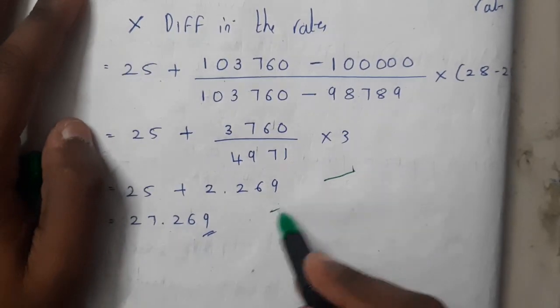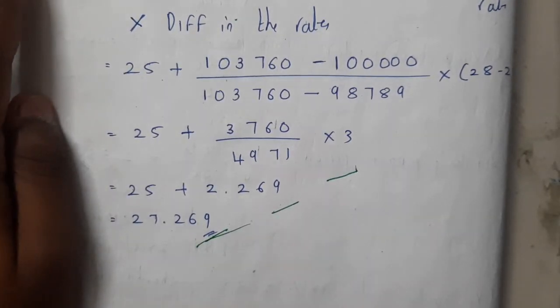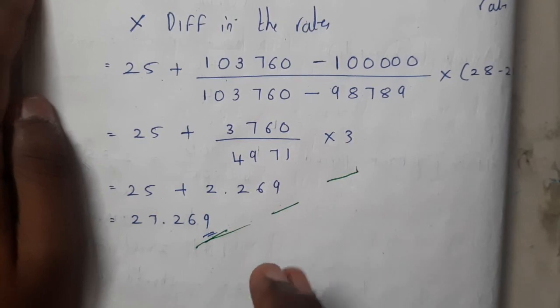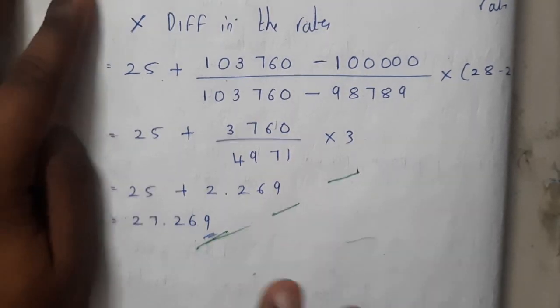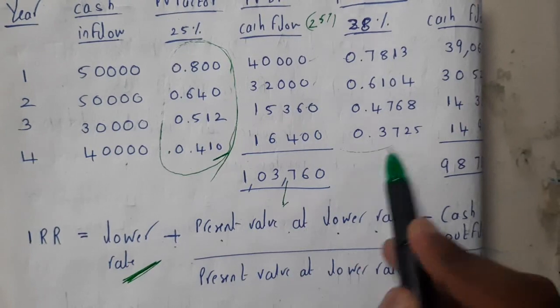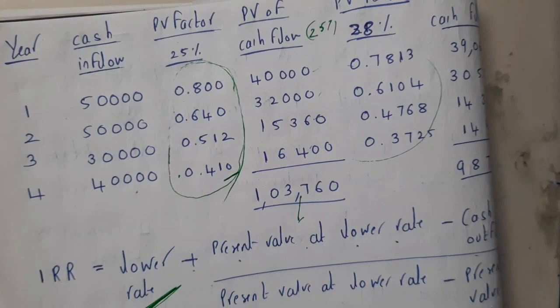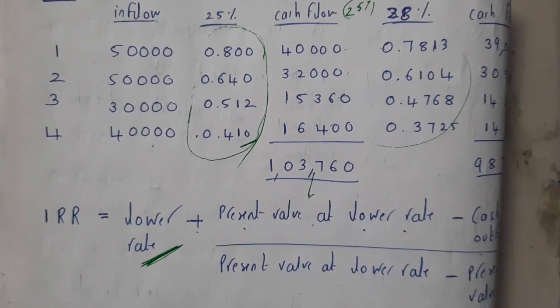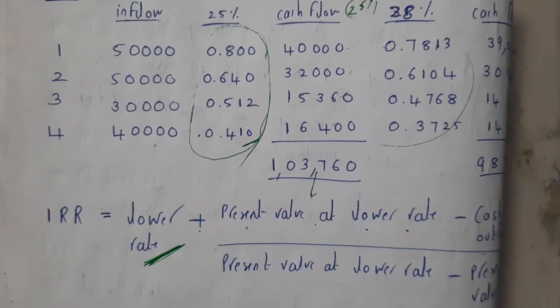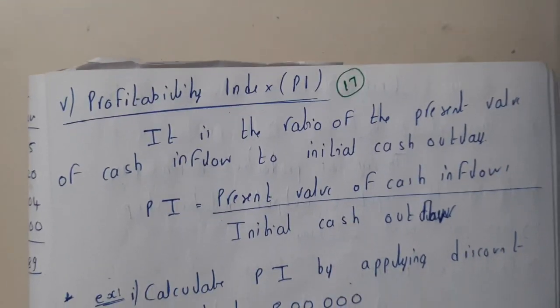After calculation, the IRR comes out to 27.269%. I hope everyone got a basic idea on this. The key question remaining is how to calculate the PV factor values when they are not given in the question — I am searching online for any trick and will post it in the group. Let us meet in the next tutorial. Thank you for watching.